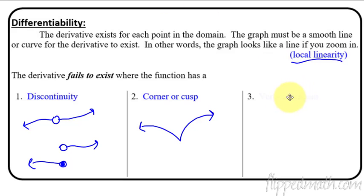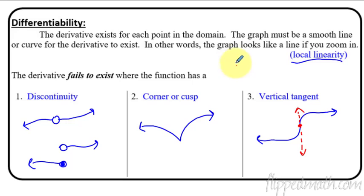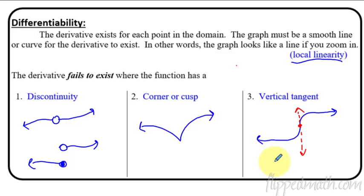The last case to worry about is a vertical tangent line. If you have a graph that comes up and then goes straight up and down, right at that one single point the derivative fails to exist. Think about it: if you have a straight up-and-down line, what is the slope? The slope is undefined for a vertical line. That's why a vertical tangent line gives an undefined slope and therefore an undefined derivative.